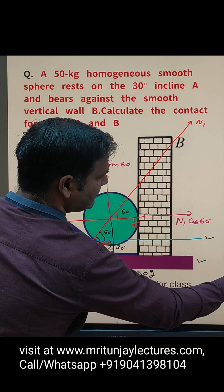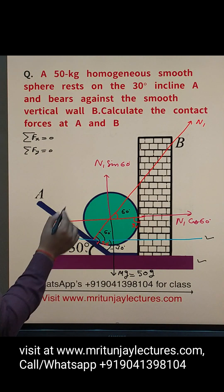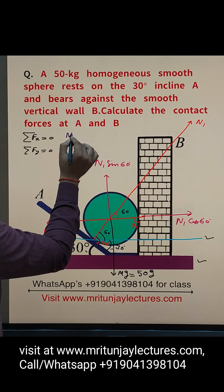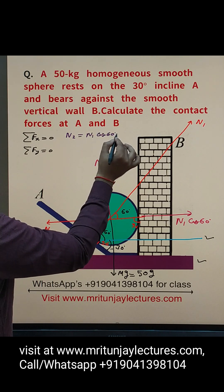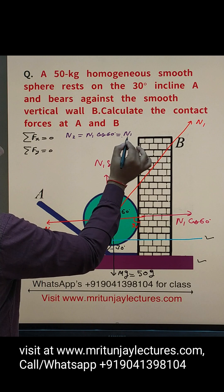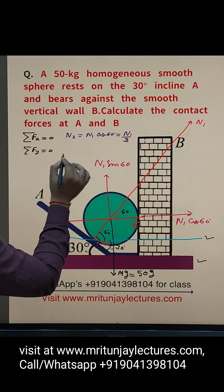So you can say that N2 is equal to N1 cos 60, and cos 60 is 1 by 2, so N1 by 2.